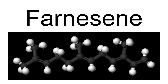Alpha-farnesene has been isolated from the oil of perilla. Both isomers are also insect semiochemicals. They act as alarm pheromones in termites or food attractants for the apple tree pest, the codling moth. Alpha-farnesene is also the chief compound contributing to the scent of gardenia, making up 65% of the headspace constituents.